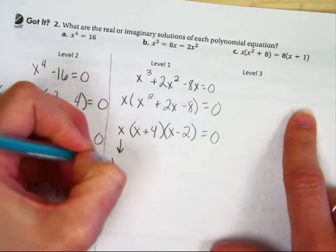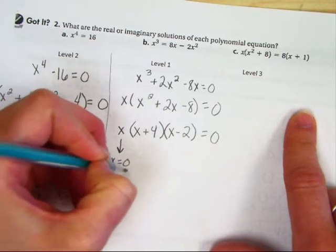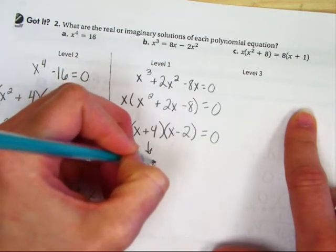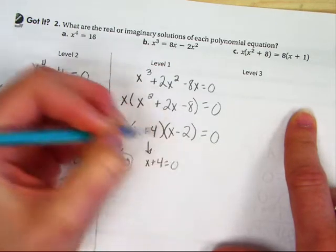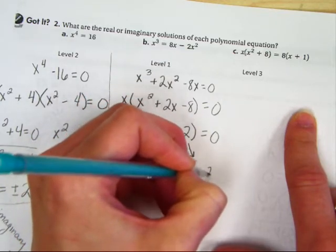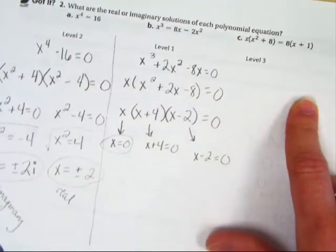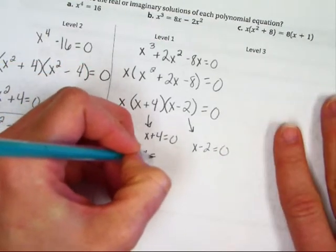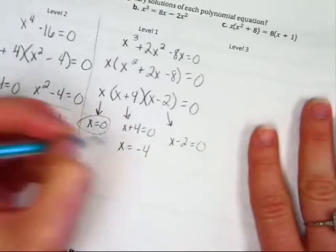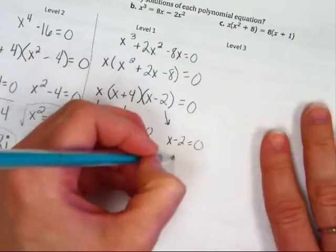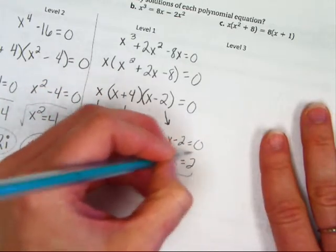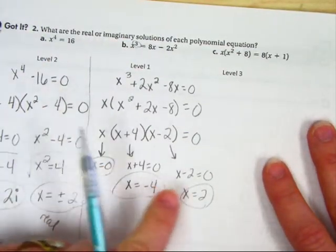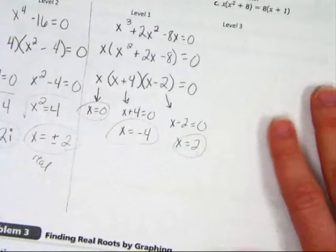So the first, x equals 0. That was easy. The next one, x + 4 = 0. The next one, x - 2 = 0. This one's already solved, so we go to these two. Take away 4, x equals negative 4. This one, add 2, x equals 2. It started as a cube problem up there, so we should have 1, 2, 3 answers. All of them are real.